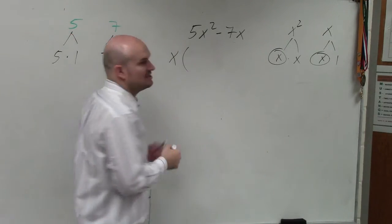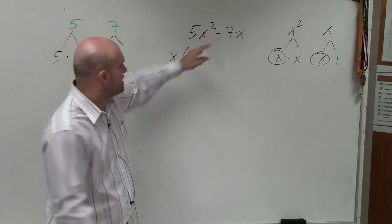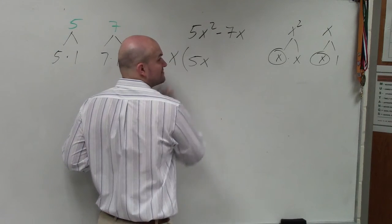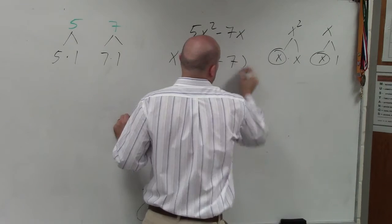Dividing out the x. So when you divide out an x from 5x squared, you're just left with 5x. When you divide an x from your negative 7x, you're left with negative 7.